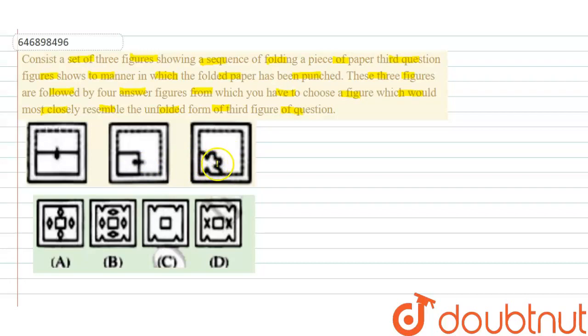Now, we have to unfold it properly to find which image will resemble it. First of all, we have to unfold the second figure. We have to make an unfolding image of the second figure.